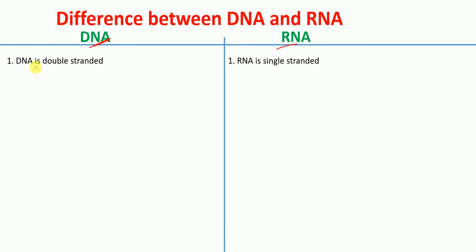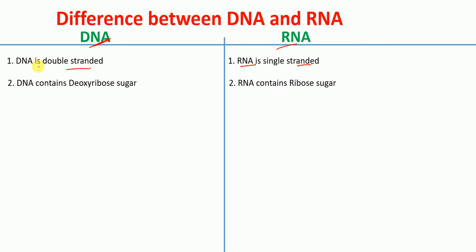DNA is double-stranded in structure, whereas RNA is single-stranded in structure. DNA contains deoxyribose sugar, whereas RNA contains ribose sugar.